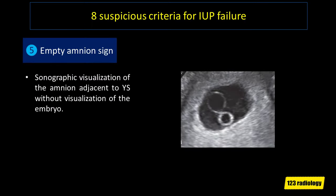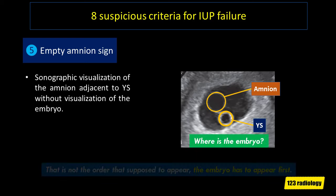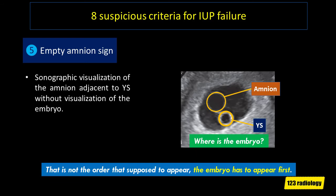The fifth suspicious criterion is the empty amnion sign: sonographic visualization of the amnion adjacent to the yolk sac with no visible embryo. As you can see on this image, here is the yolk sac and here is the amnion — but where is the embryo? That is not the order that is supposed to appear; the embryo has to appear first. This is suspicious for pregnancy failure and follow-up ultrasound study is recommended.